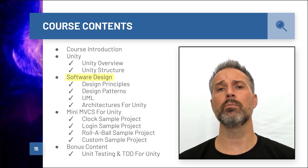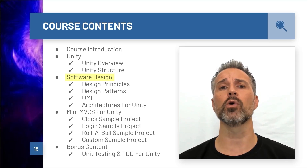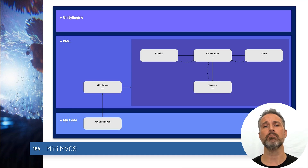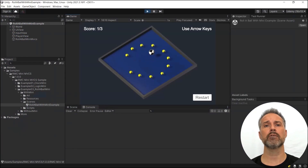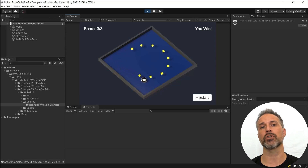While the course will mention several different architectures compatible with Unity, we'll move forward using a particular framework that I created: the Mini MVCS framework. The Mini MVCS for Unity is a great framework to use for production as well as educational purposes, and it's for that reason that I focus on it here in the course.